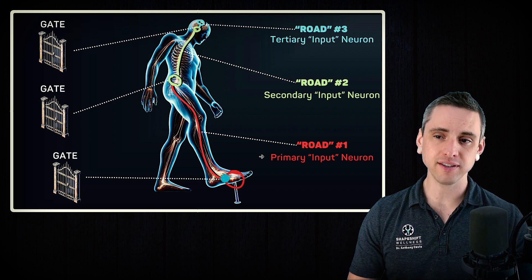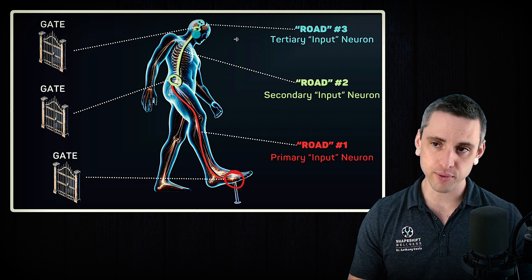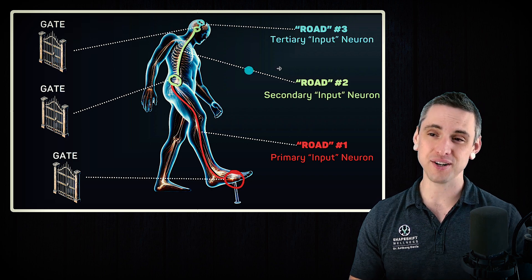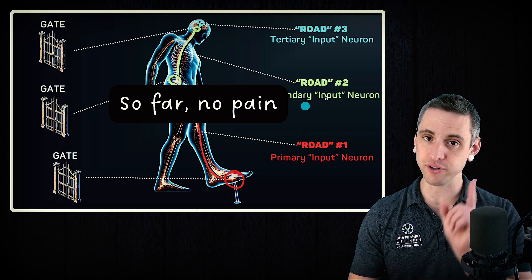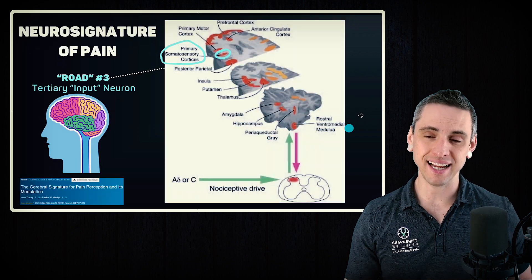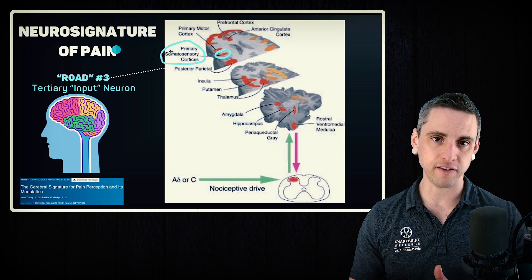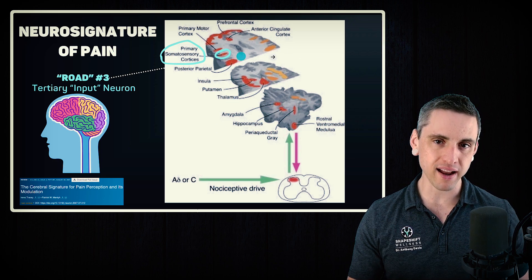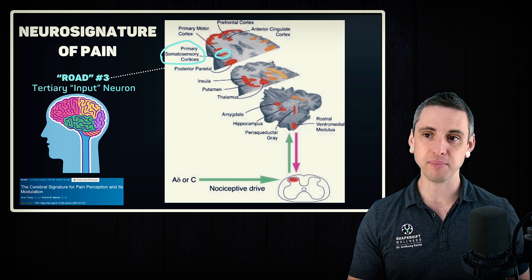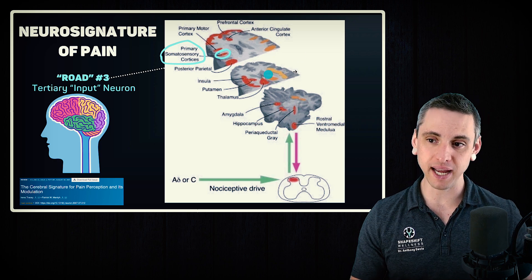So we started in the foot, stepped on a nail, went through a gate, traveled to the spinal cord, went through another gate, traveled to the brain, went through another gate, traveled to another region of the brain — and still, so far, we have no pain. This study found a certain neurosignature of pain in the brain, with all these different regions lighting up in response to pain. And depending on how they interact, we may or may not have pain.